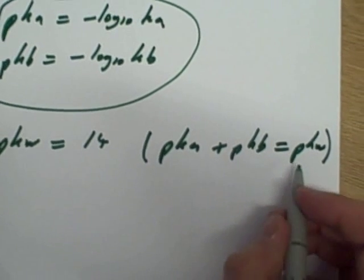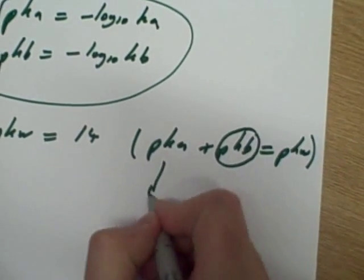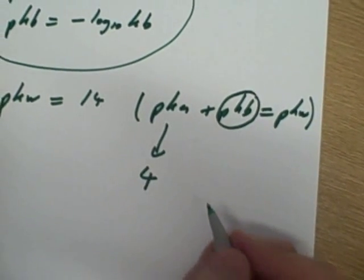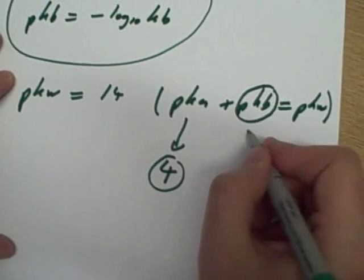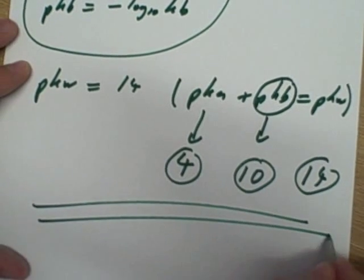This makes life a lot easier. For example, if I wanted to calculate the pKb, and I knew the pKa was, say, 4. I know that pKw is 14, so 14 minus 4 would mean the pKb would be 10. Very handy relationship.